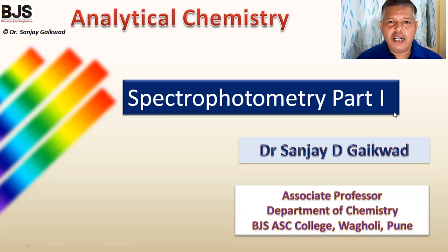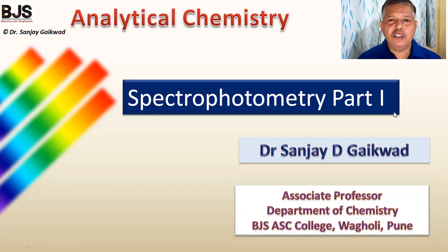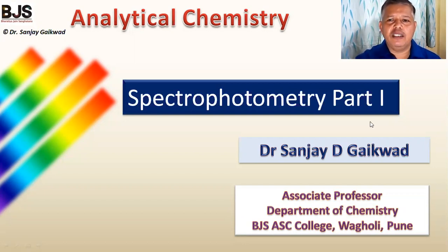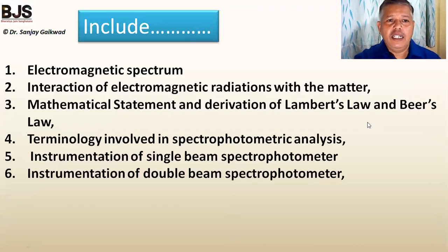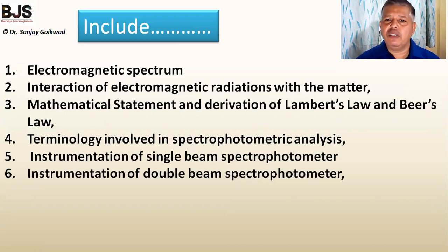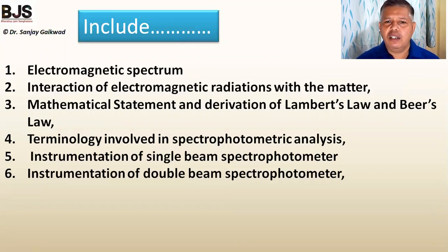Hello. In this analytical chemistry video channel, today we are discussing the basics of the analytical instrument, the spectrophotometer. This first part is related to basic instrumentation. It includes the electromagnetic spectrum, interaction of electromagnetic radiation with matter, mathematical derivation of photo laws like Lambert's Law and Beer's Law, some terminology involved in spectrophotometric analysis.